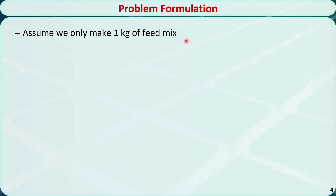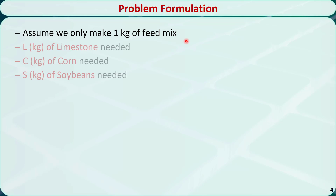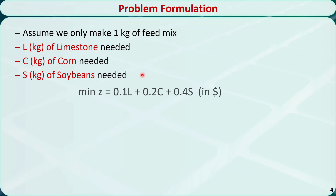To simplify this problem, we assume we only make 1 kg of feed mix. We define 3 distinct variables: L is the kg of limestone needed, C is the kg of corn needed, and S is the kg of soybean needed in the final mix. We want to minimize the total cost, which is equal to the unit cost of limestone times its quantity, plus the unit cost of corn times its quantity, plus the unit cost of soybeans times its quantity.